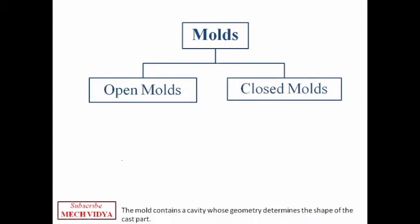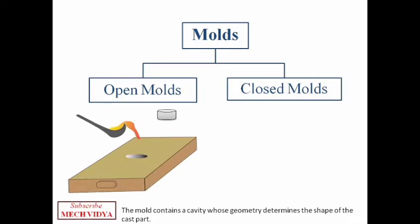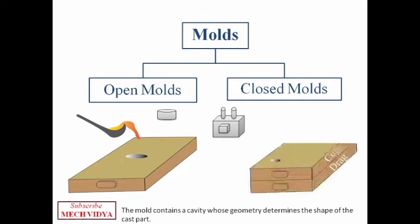Now the open molds are used to produce very simple parts such as this, while for creating complicated parts like this we need to have closed molds. Now let us try to understand why complicated metal parts cannot be created using open molds.